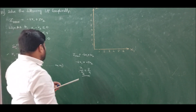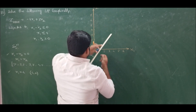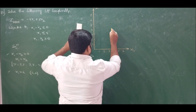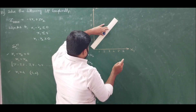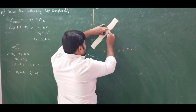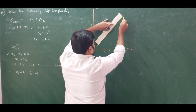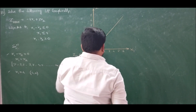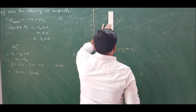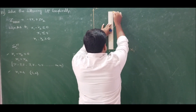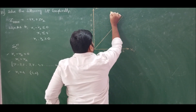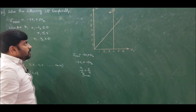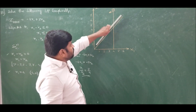Now let us find the feasible region. We have a line at 45 degrees extending to infinity, and another line x1 = 4 with coordinate (4, 0). Since x1 ≤ 4, the second constraint moves towards the left. For the first constraint, the question is whether the feasible region is above or below the 45-degree line.